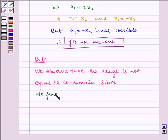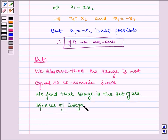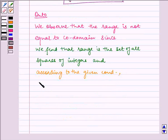Since we find that range is the set of all squares of integers, and according to the given condition, codomain is the set of all integers.